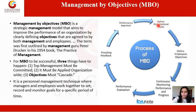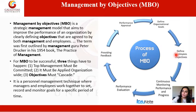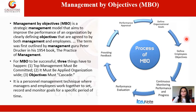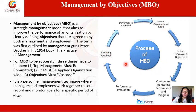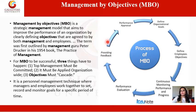In MBO, the steps are: define organizational goals, define employee objectives — both decided together — then continuous monitoring of the employee working toward the objective, followed by performance evaluation and providing feedback. Objectives are set in a cascade manner, meaning once one objective is achieved, another is set, and so on progressively.